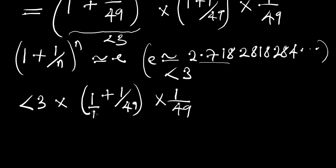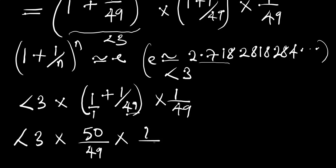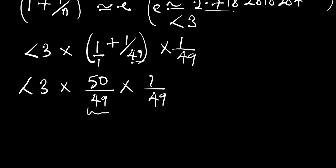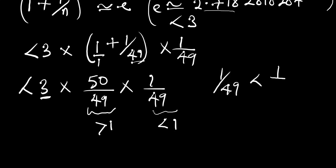Since what we have here is less than 3, we can write the expression as less than 3 times 1 plus 1 divided by 49, times 1 divided by 49. We can rewrite this by taking the common LCM: multiplying 49 by 1 plus 1 gives us 50, so we have a number less than 3 times 50 divided by 49, times 1 divided by 49.